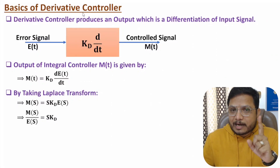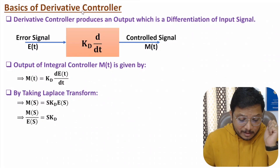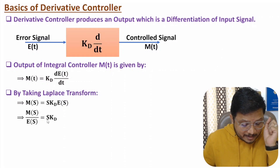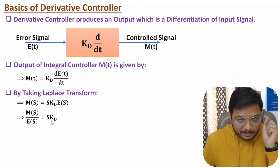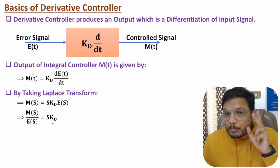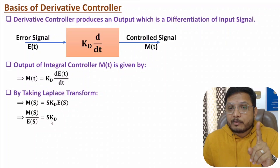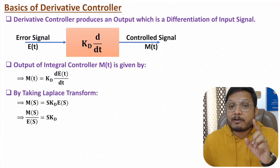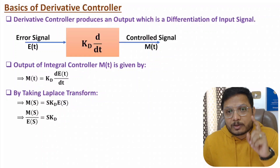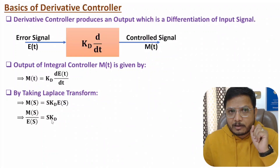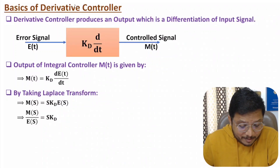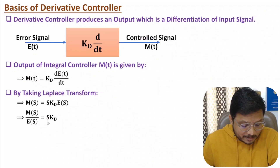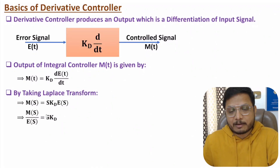With derivative controller, the transfer function is s × Kd. This means in the numerator we have order one, which means we are adding a zero to the system. So if you add a derivative controller to your system, you will be adding a zero to the system.